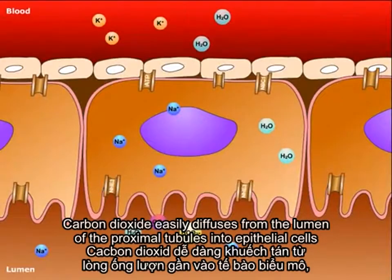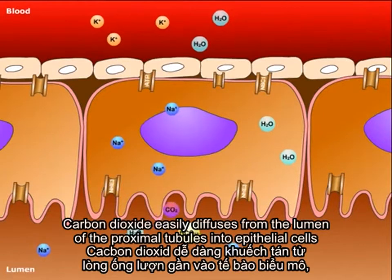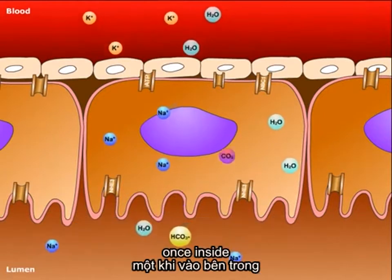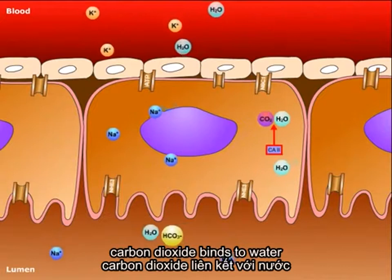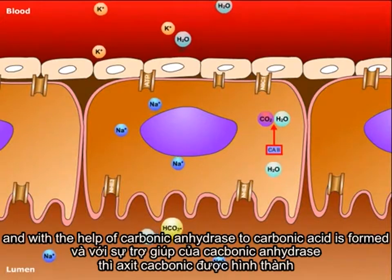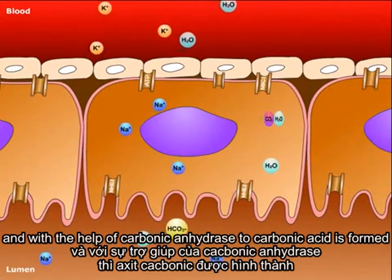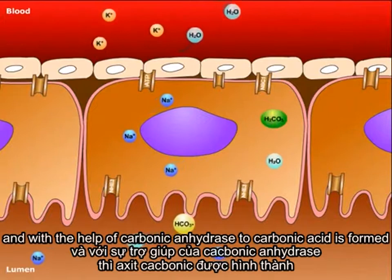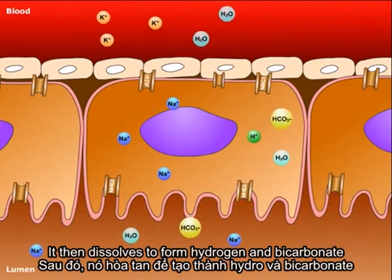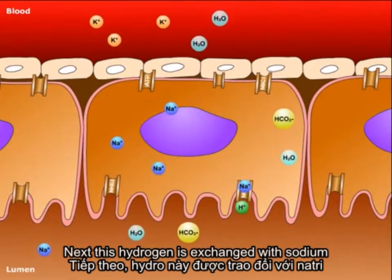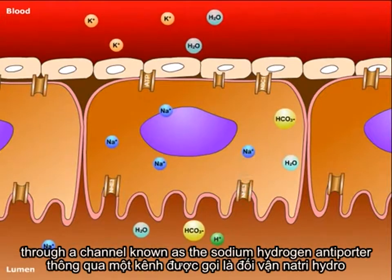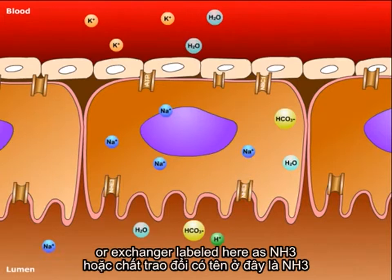Carbon dioxide easily diffuses from the lumen of the proximal tubule into epithelial cells. Once inside, carbon dioxide binds to water, and with the help of carbonic anhydrase 2, carbonic acid is formed. It then dissolves to form hydrogen and bicarbonate. Next, this hydrogen is exchanged with sodium through a channel known as the sodium-hydrogen antiporter, or exchanger, labeled here as NHE3.